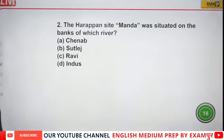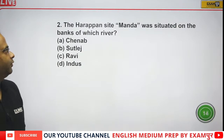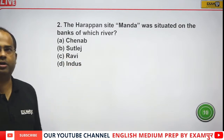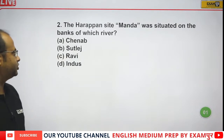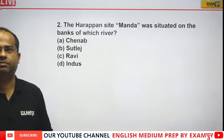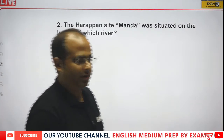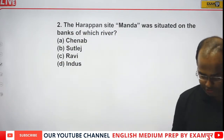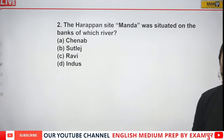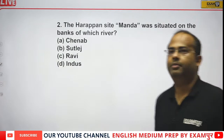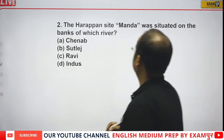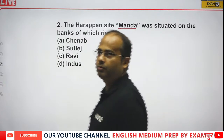The next question: the Harappan site Manda is located on the bank of which river — Chenab, Satlaj, Ravi, or Indus? This question came once in the CPO examination. What will be the correct answer? Momita is saying option D, that is Indus River. We are talking about Manda.